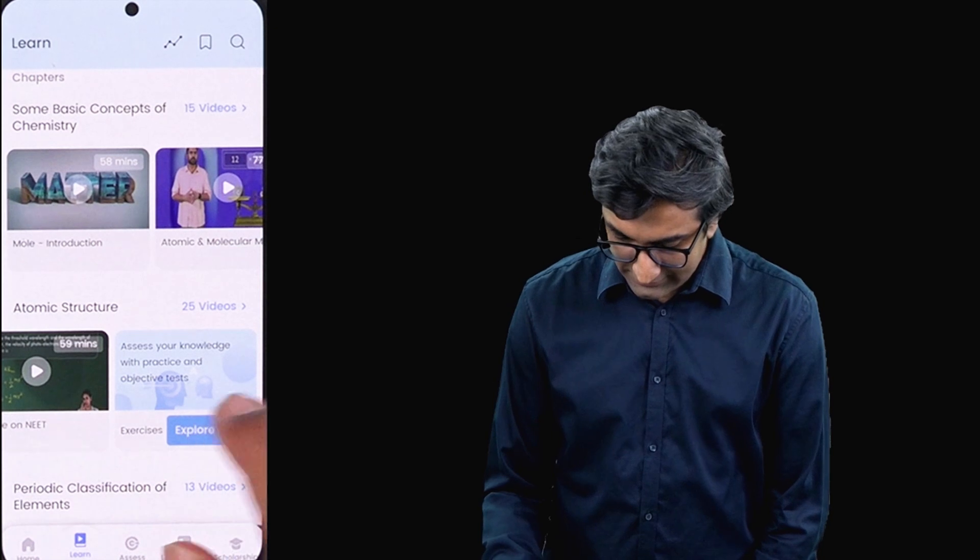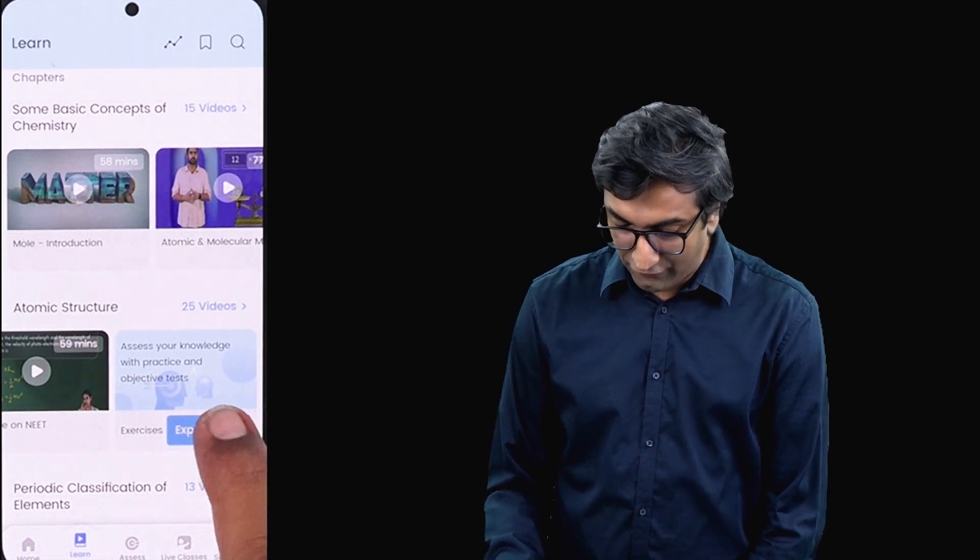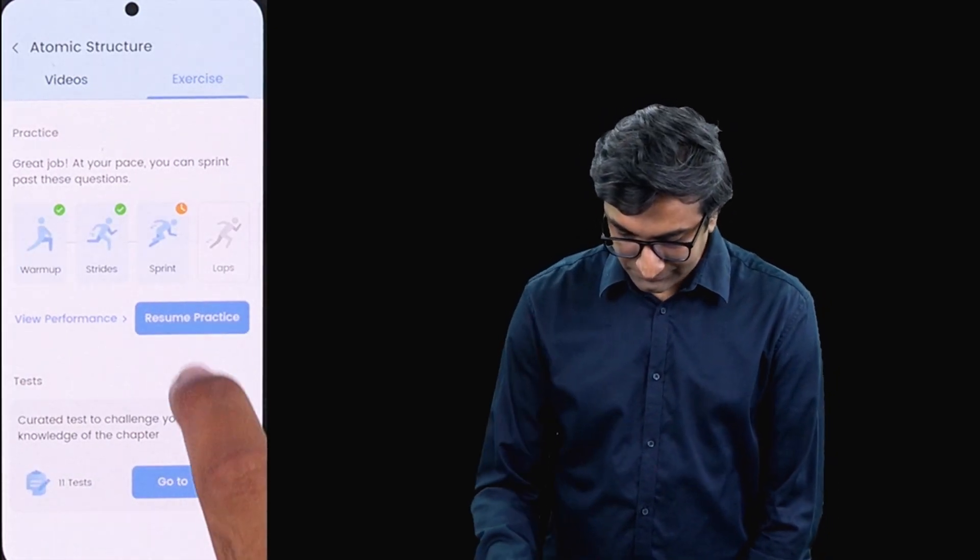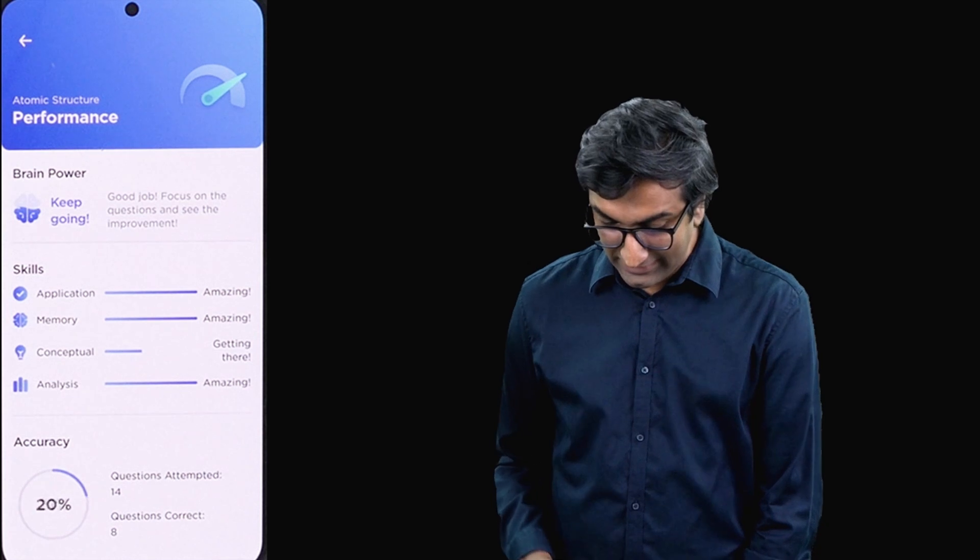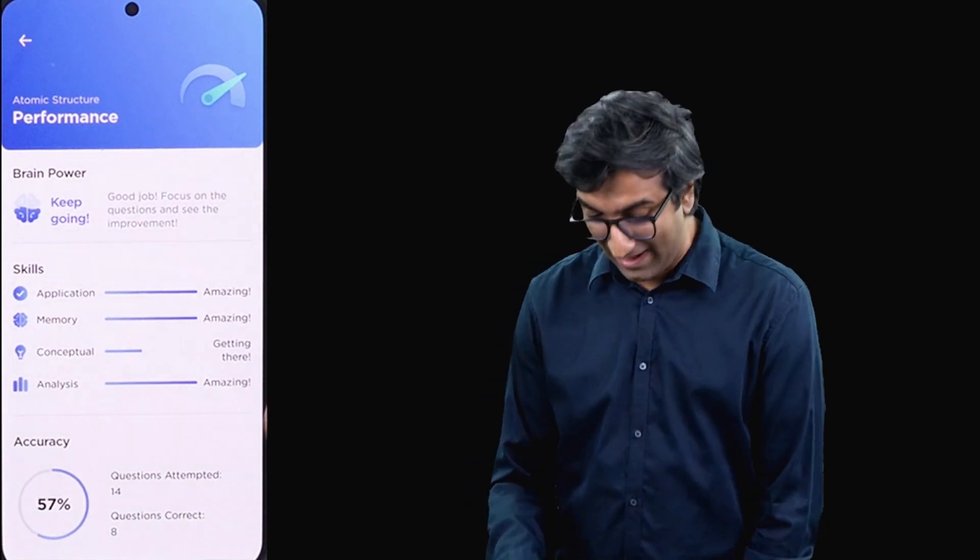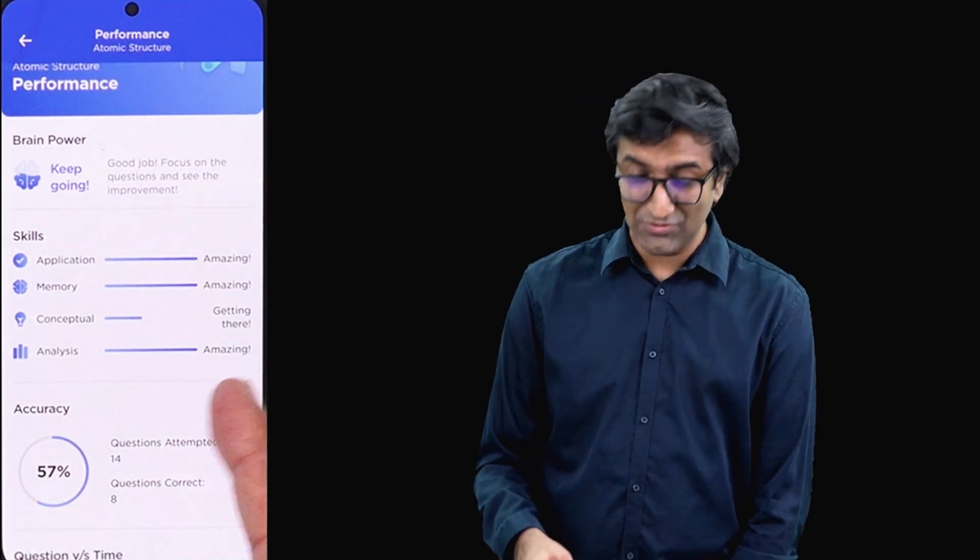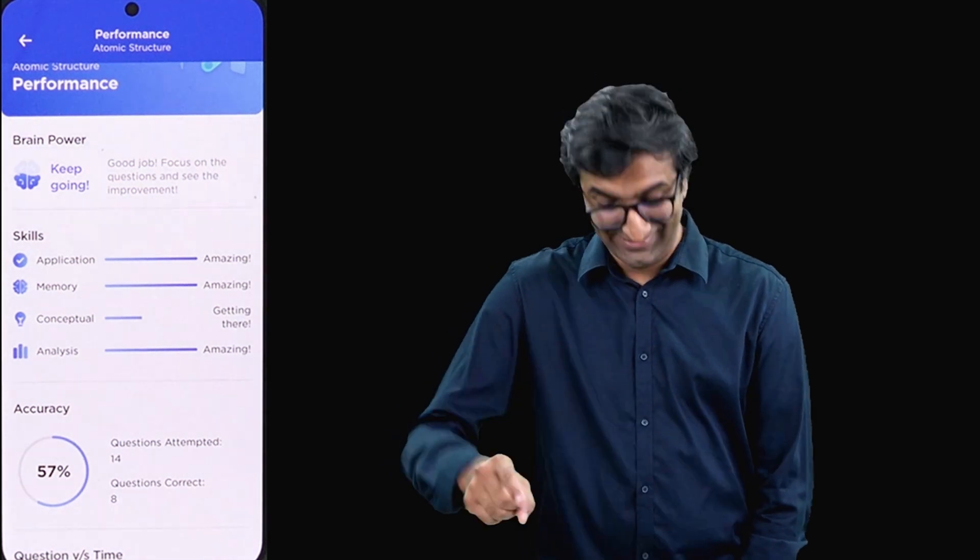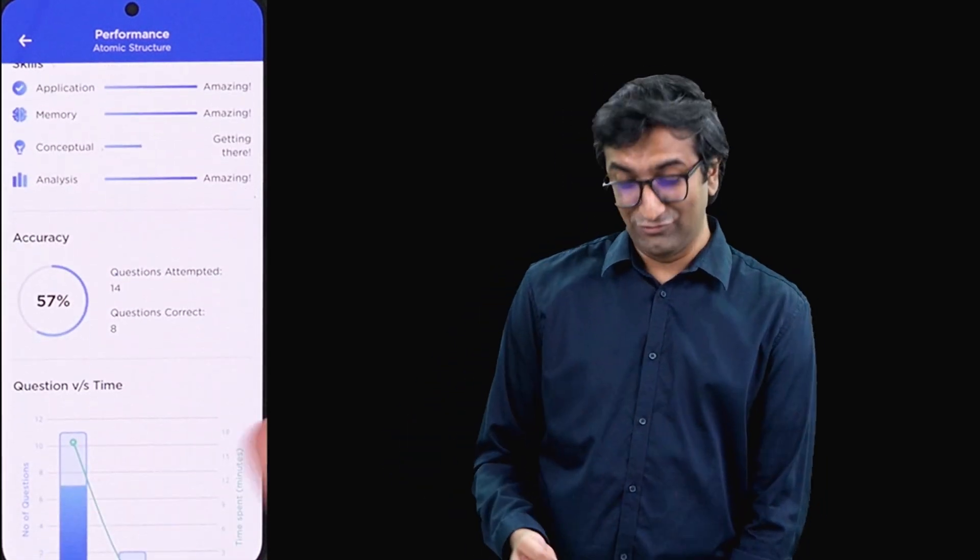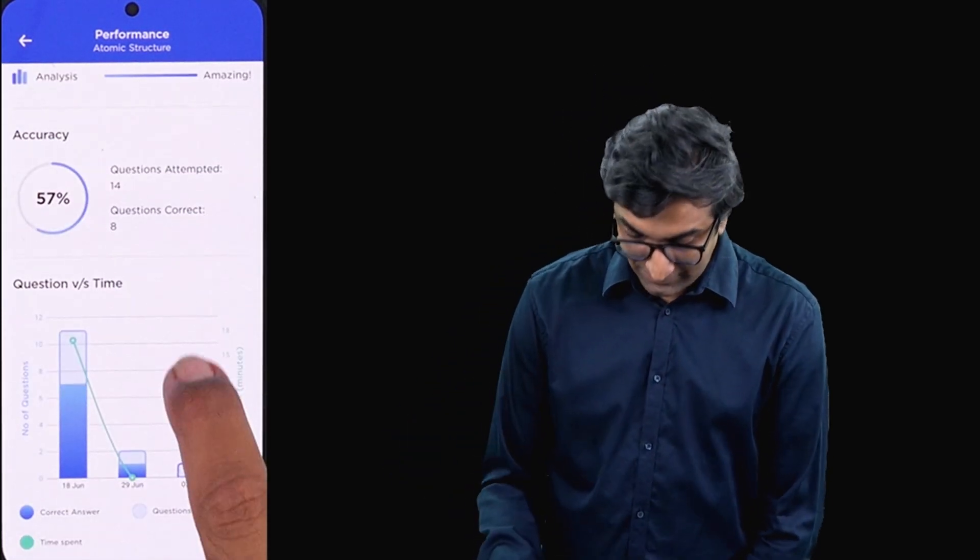Cool. So that's how the practice section works. And if you like, what you can do is you can also look at the performance of the practice section. Click on this. It tells you that it looks like I was pretty all right in application and memory. But conceptual, I could definitely do better. I was just clicking on the answer randomly. Accuracy could definitely get better. Tells you how much time I spent.